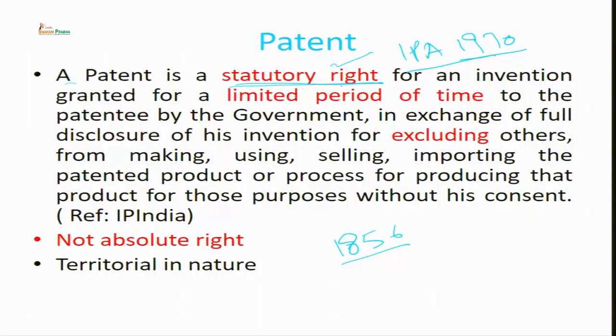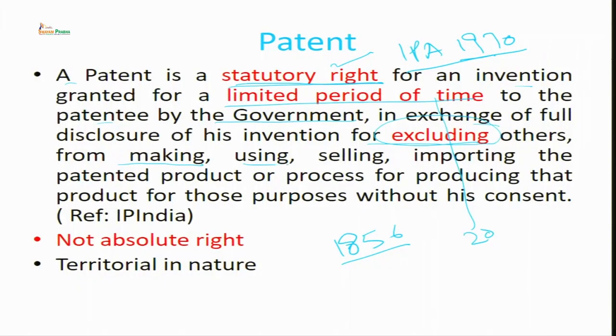Before that we have to know what are the rights of the patentee and what is a patent. The patent is a state-granted right for an invention for a limited period of time — 20 years — to the patentee by the government, in exchange for full disclosure of the invention, for excluding others. This patent right excludes the whole world from using that particular invention. Others cannot make, use, sell, or import the patented product or process — both product as well as process.